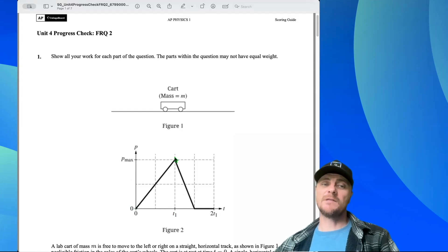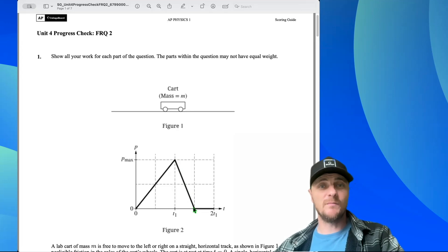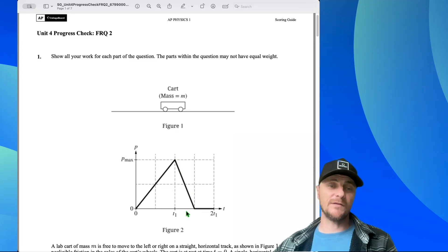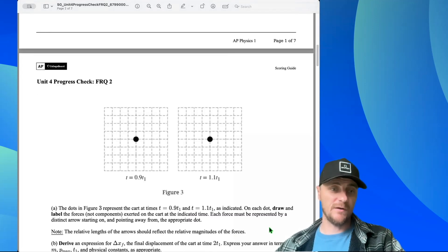Then there's a decrease in momentum from t1 to 1.5t1. If there's a decrease in momentum, there must be a decrease in velocity and therefore a deceleration during this time interval. So what I just discussed is going to help us in Part A.